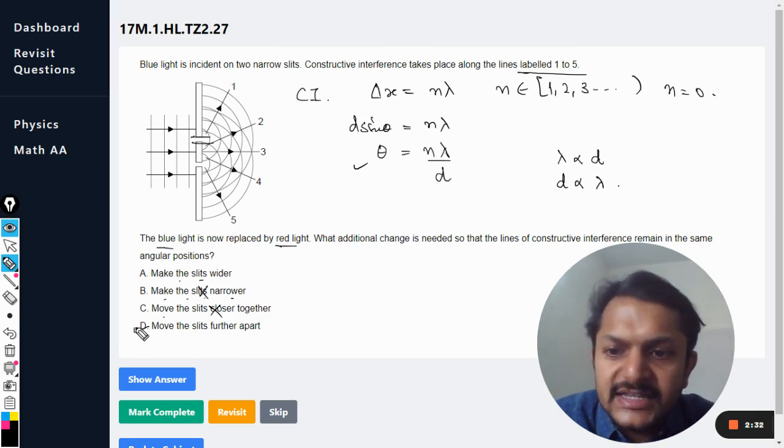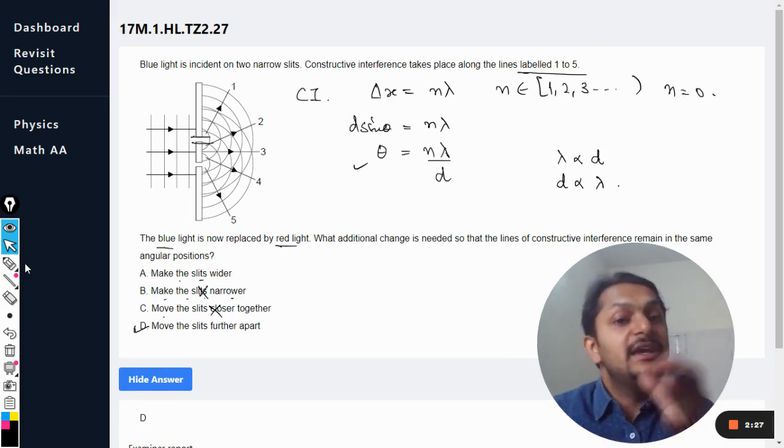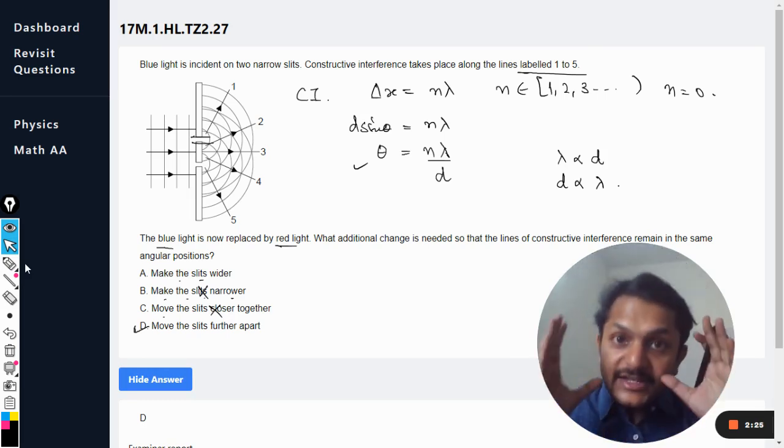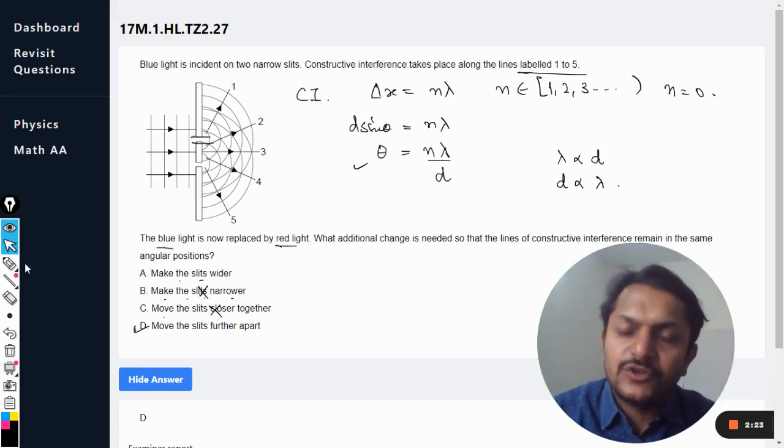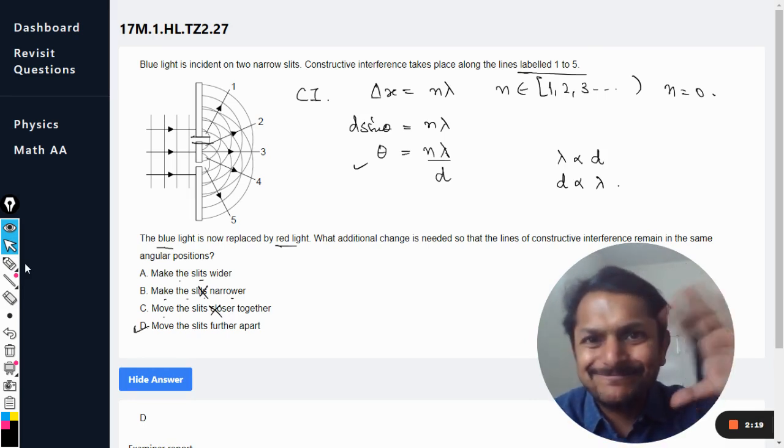So D is the only correct answer. Let us see the mark scheme, and yes, my dear students, the answer is D. This is the explanation for this. Is there any doubt that you have for this question? Please ask that in the comment section, no problem at all. All the best, bye.